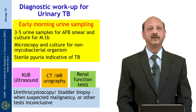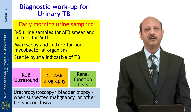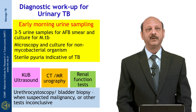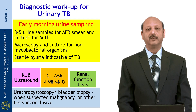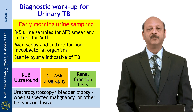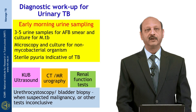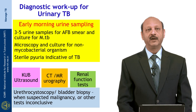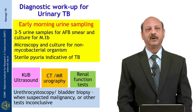For urological tuberculosis, three to five early morning urine samples should be obtained and subjected to smear and culture; microscopy and culture for non-mycobacterial organisms should also be done. Sterile pyuria is indicative of tuberculosis. Other tests that can be done are KUB ultrasound, CT/MR urography and renal function tests. In cases where malignancy is considered or other tests are inconclusive, urocystoscopy and bladder biopsy can be used.